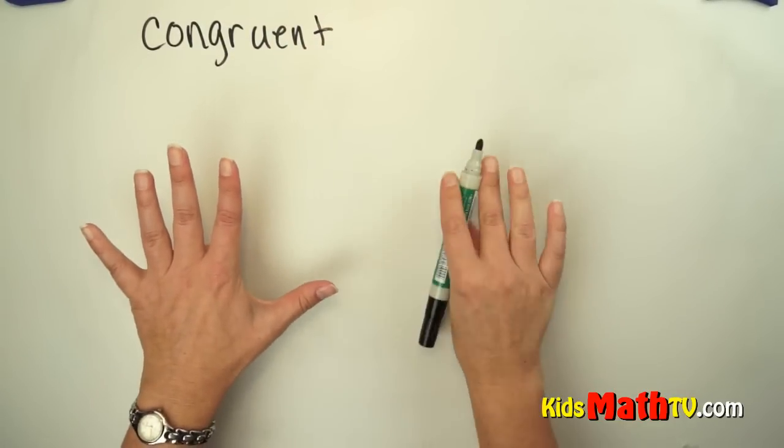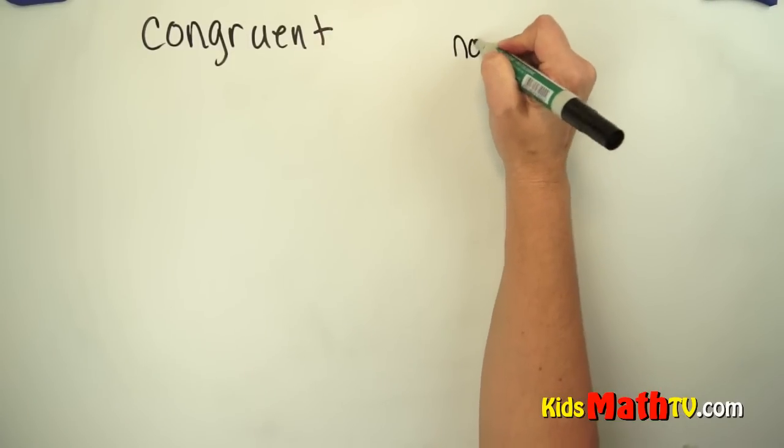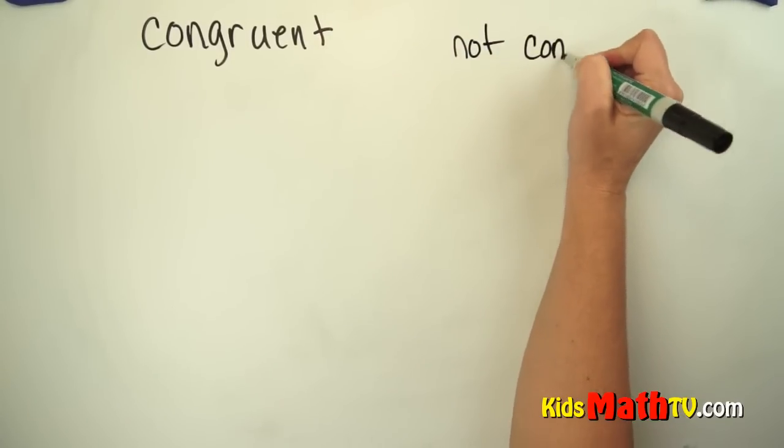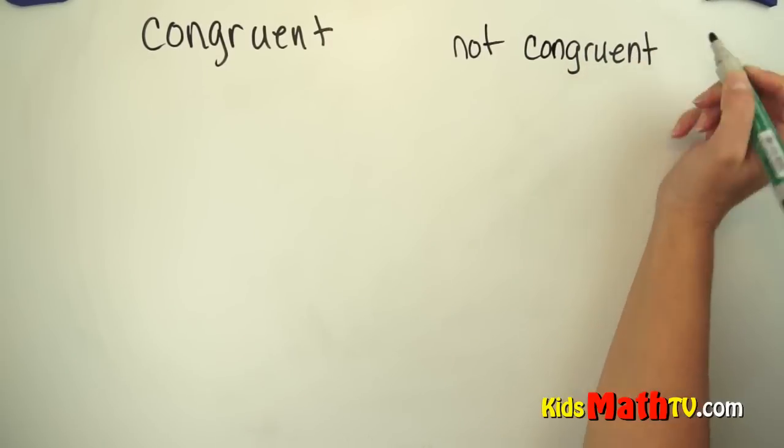Kind of like your hand, it's the same shape and the same size as your other hand. Not congruent means not the same shape or not the same size.